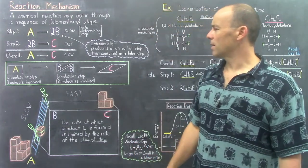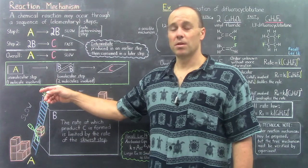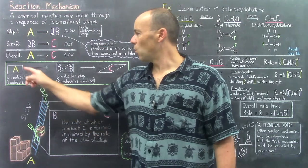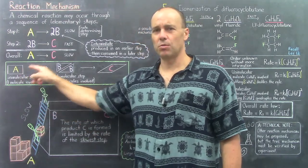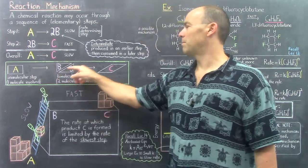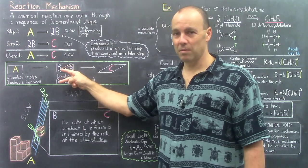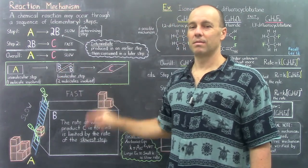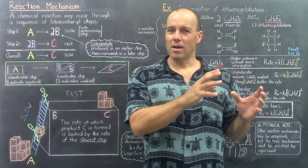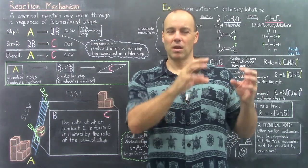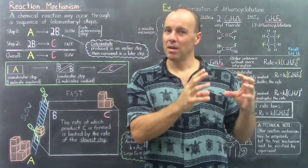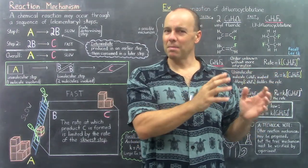More information regarding this mechanism involves the number of molecules required to react in each of the elementary reactions. In the first step, one molecule of A is required to react, so we say that it's a unimolecular step. The second step is bimolecular, because two molecules of B are needed to react here. Termolecular reactions do exist, but they are kind of rare, because to have a termolecular reaction, three molecules need to be at the same place and at the same time in order for them to react.